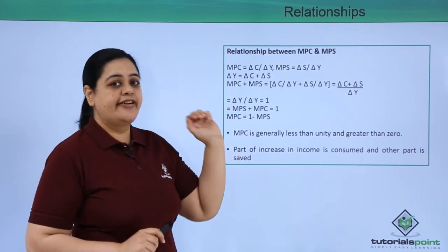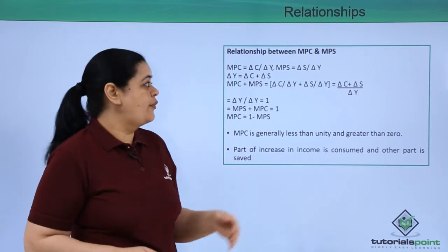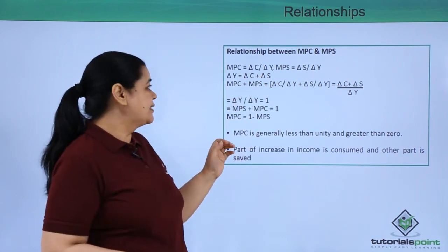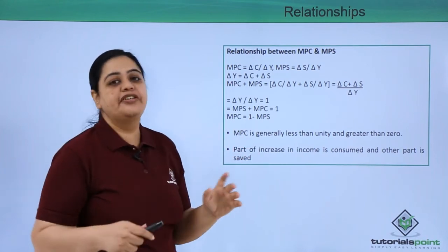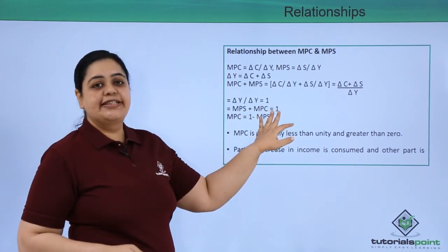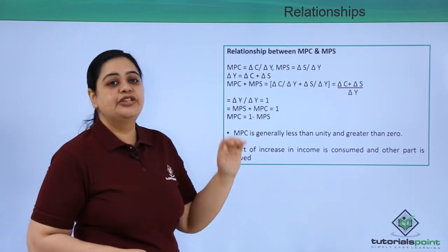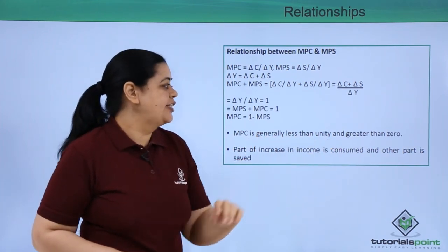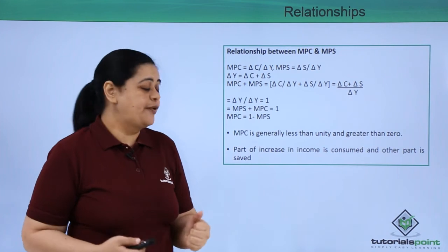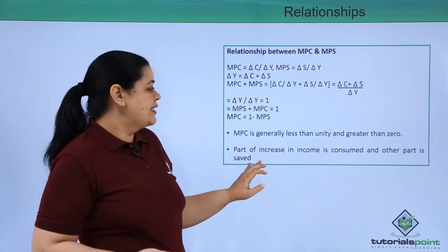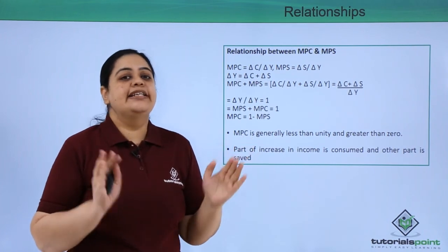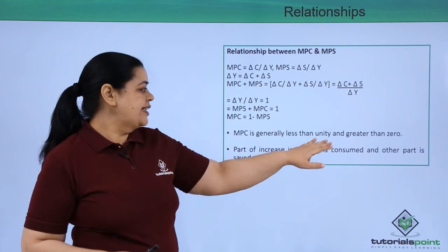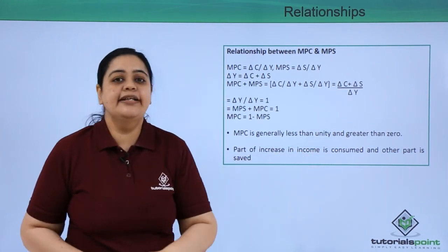The relationship between MPC and MPS: since MPC = ΔC/ΔY and MPS = ΔS/ΔY, and ΔY = ΔC + ΔS, we get MPC + MPS = 1, so MPC = 1 − MPS. MPC is generally less than unity but always greater than zero, because part of any income increase is consumed and part is saved — this is the general tendency among people.